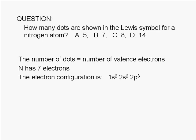Its electron configuration is 1s2, 2s2, 2p3. There are 2 electrons in the first shell and 5 electrons in the second shell.